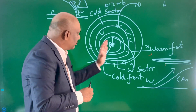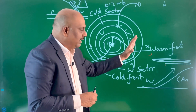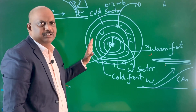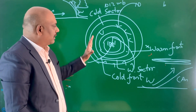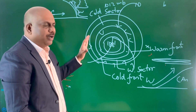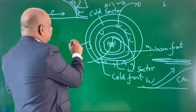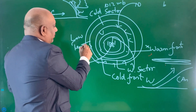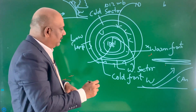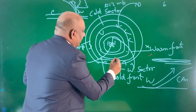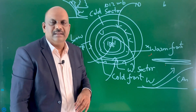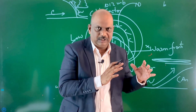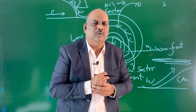Once the cold front passes, that area comes under the influence of the rear end of the temperate cyclone. The rear end records the lowest temperature, while higher temperatures are found in the southern region. That is why once a temperate cyclone passes, that area experiences a cold wave.